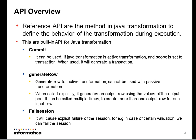GenerateRow is used when the Java transformation is set to an active transformation and cannot be used in a passive transformation. When called explicitly, GenerateRow creates an output row with all the specified values in the output row. It can create multiple output rows for a single input row, depending upon the logic defined.